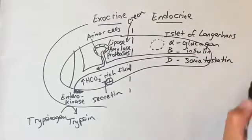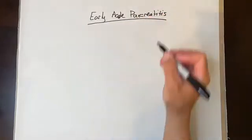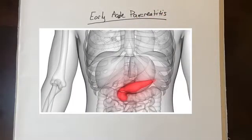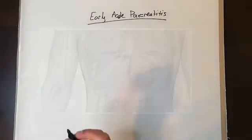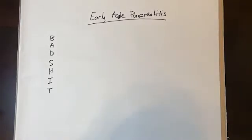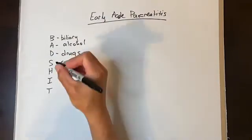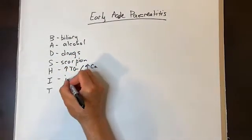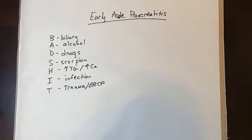Pancreatitis is broken down into acute pancreatitis — discussed in two phases (early and delayed) — and chronic pancreatitis, which is present over years. Causes of acute pancreatitis can be remembered with the mnemonic BAD SHIT: Biliary source, Alcohol, Drugs (such as spironolactone and Lasix), Scorpion bites, Hypertriglyceridemia and Hypercalcemia, Infections (usually a virus such as CMV), and Trauma (including post-ERCP pancreatitis). The most common causes in America are biliary sources and alcohol.